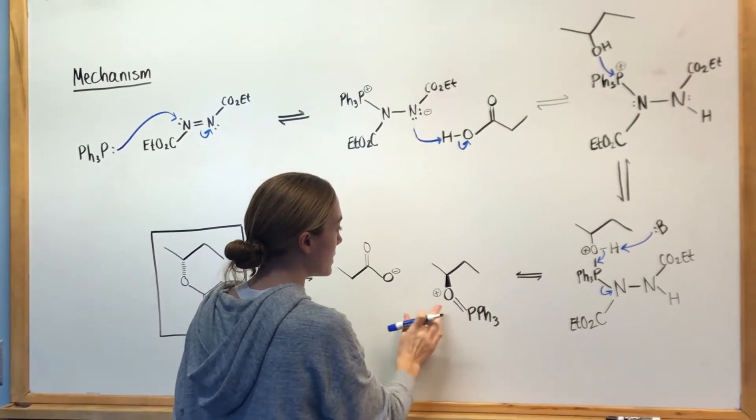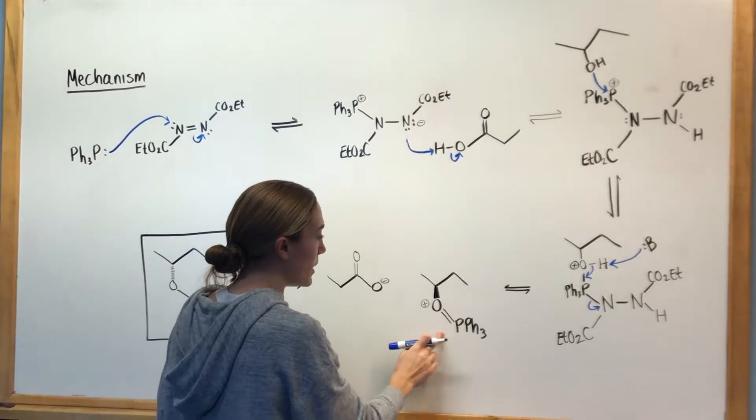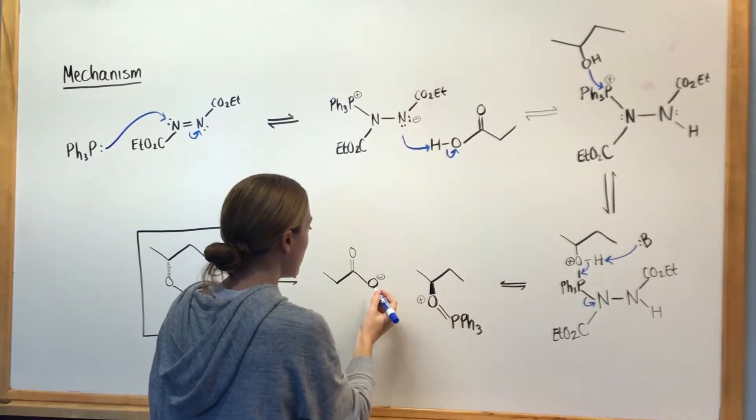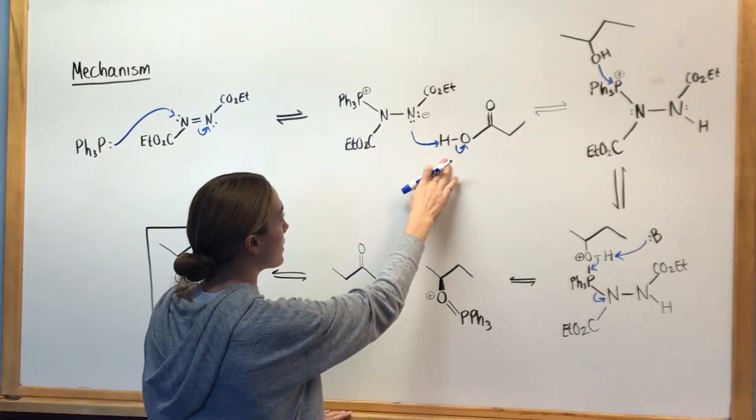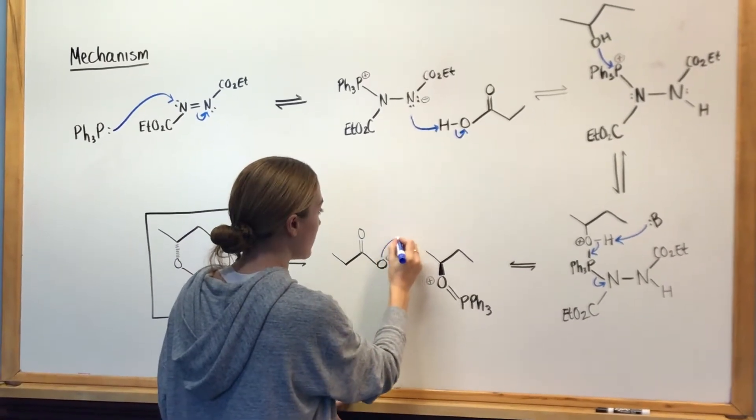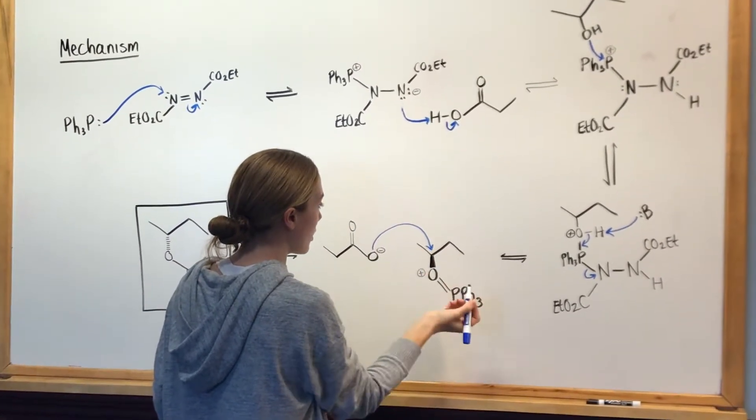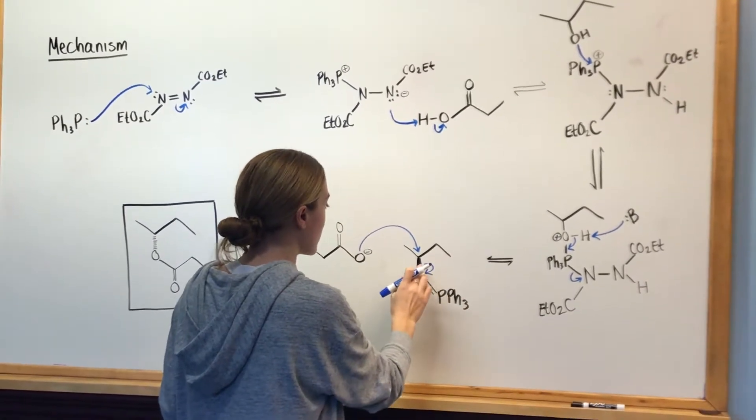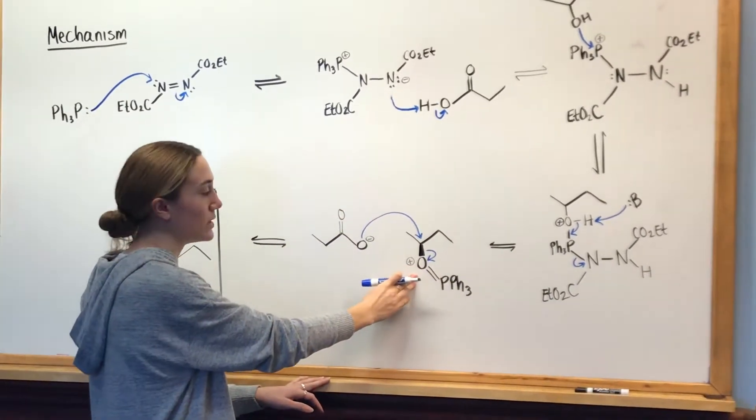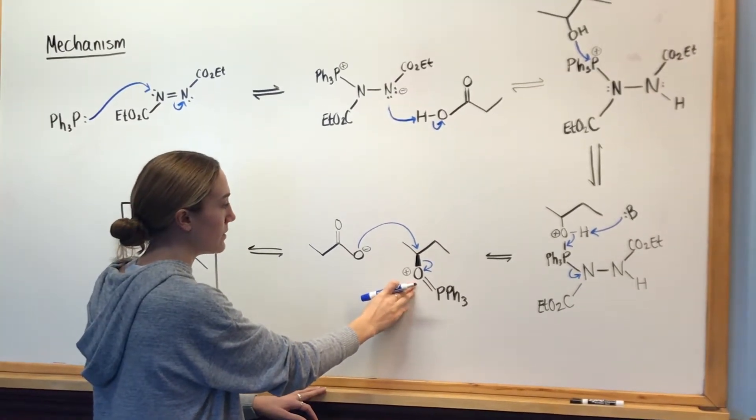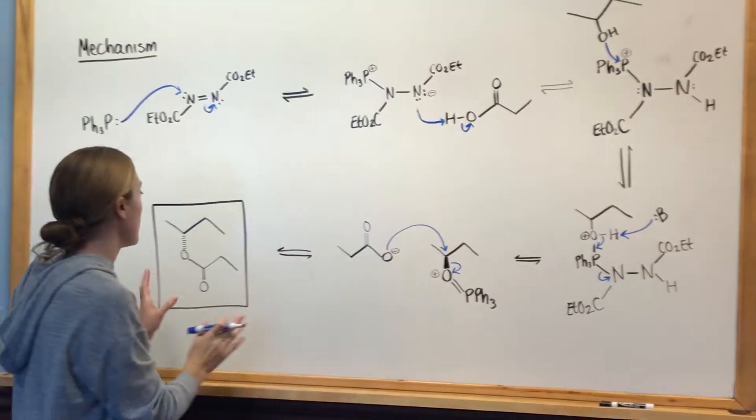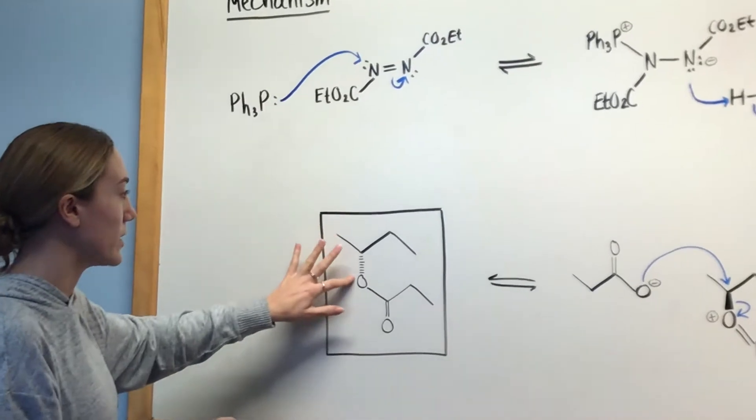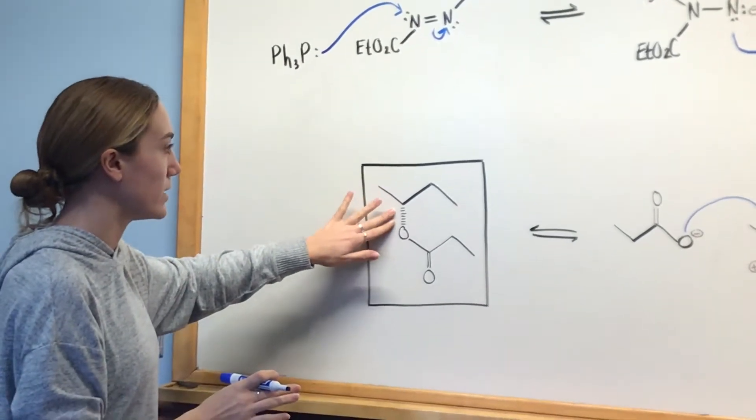We now have this molecule here with this positive oxygen double bonded to the phosphorus. This negative molecule that we made up here in this step is really important. This negative oxygen is going to come attack this center carbon, and then the rest of this is going to leave. These electrons are going to come over here onto the oxygen to get rid of that positive, and then that molecule will leave. That forms our product here with the inverted stereochemistry at that center carbon.